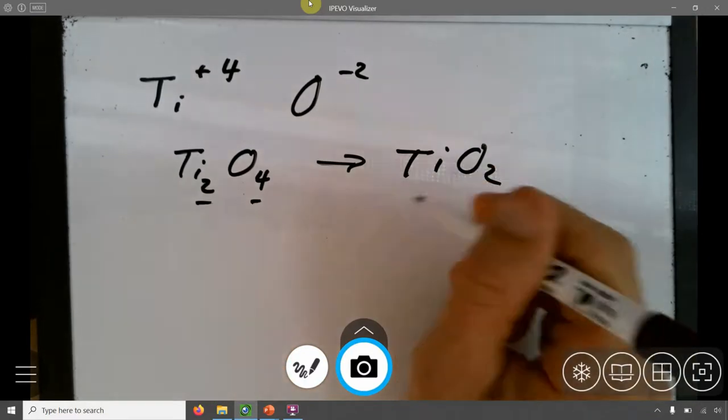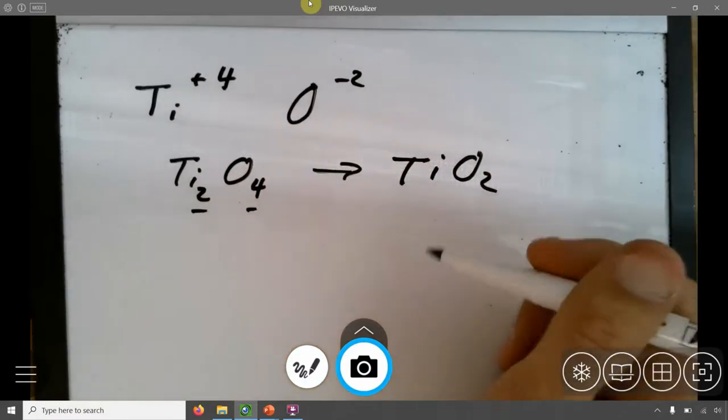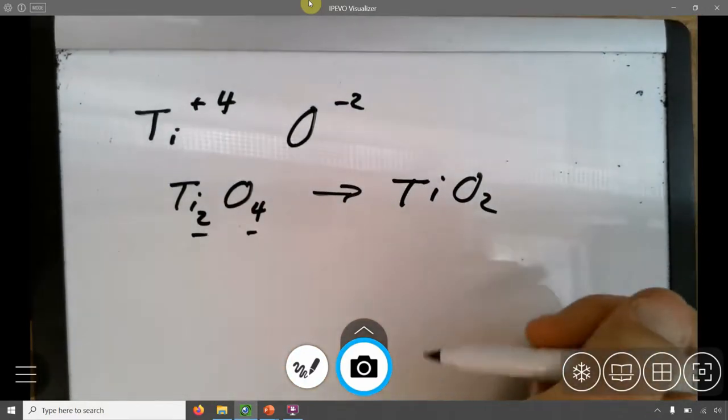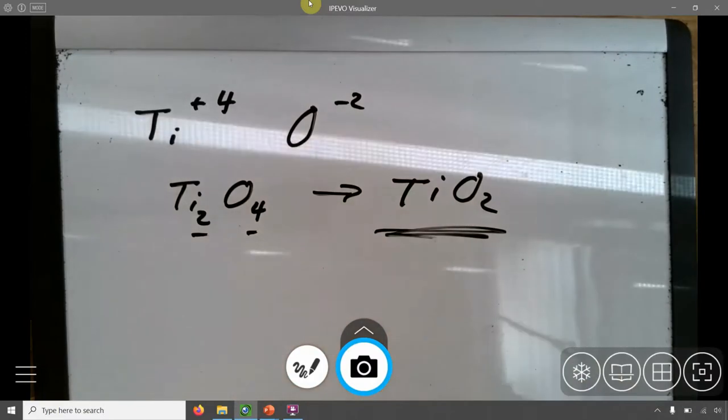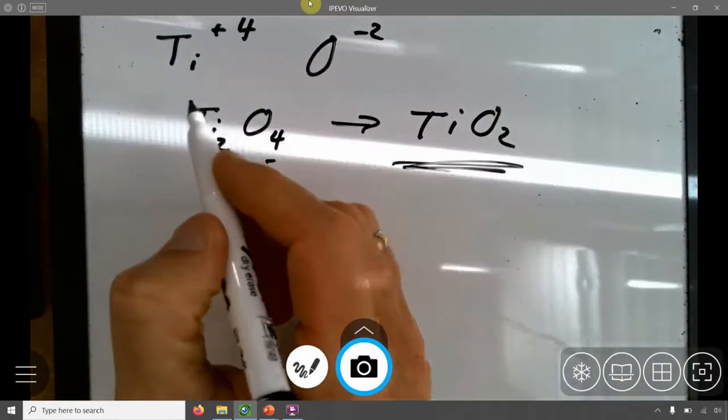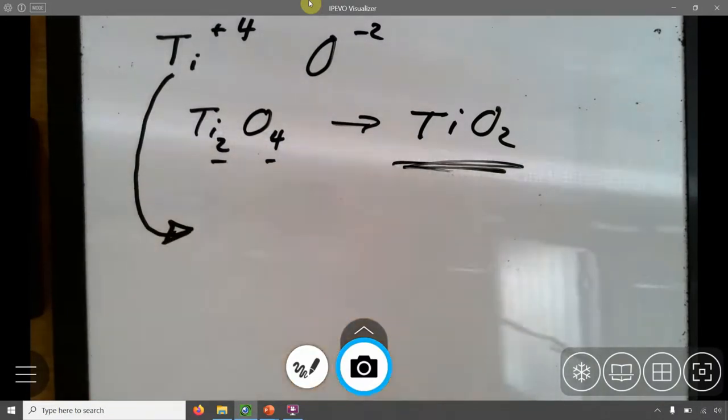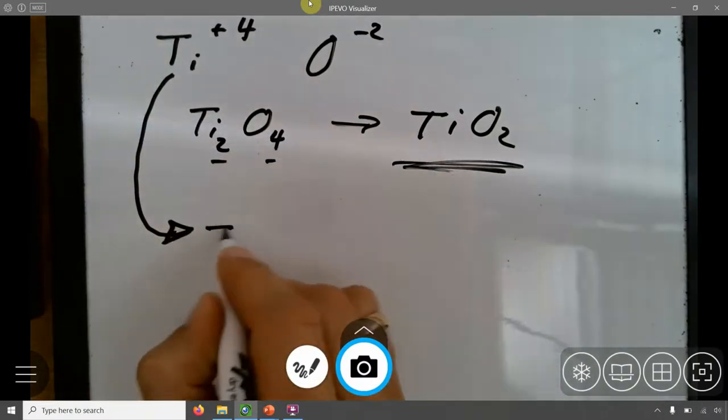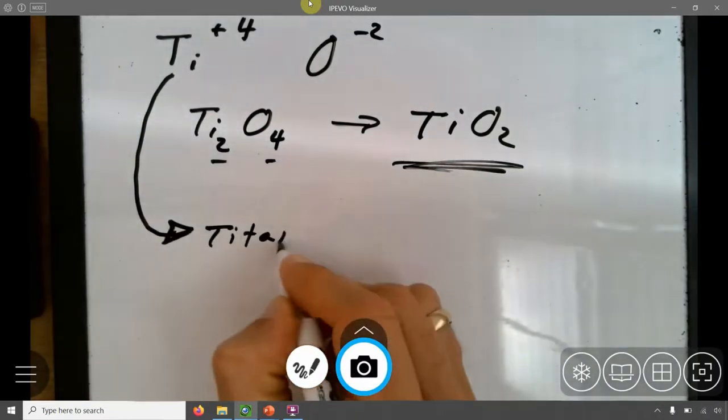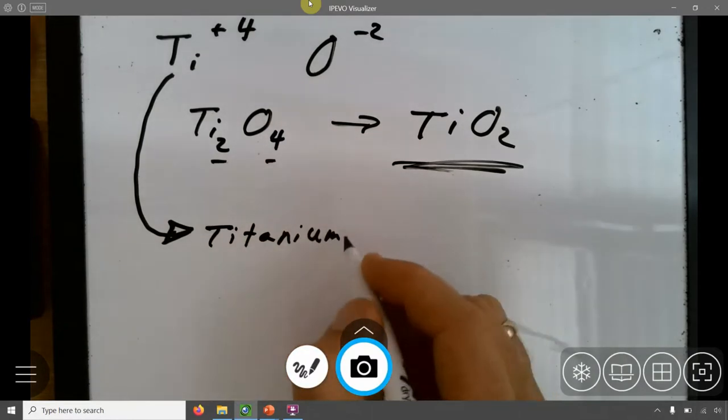So TiO2 is your compound here. Let's name this. This is not group one, and it's not group two, and it's not group three. So I got to indicate what the charge is. This is titanium, and it's four.